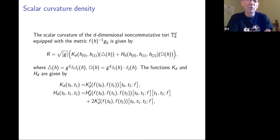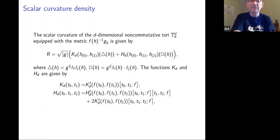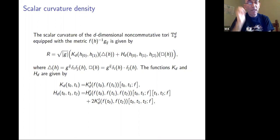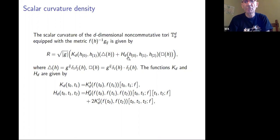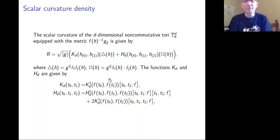So again, this is for general n-dimensional noncommutative torus, for general metrics in this sense — not the most general metric, the metrics as I explained in the paper. The term is obtained by doing functional calculus in these two terms K_D and H_D. They depend on the dimension in a uniform way, and K_D and H_D are given by uniform formulas in terms of Newton divided differences. I think these are the most general formulas we can think of so far.